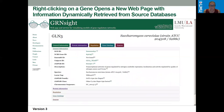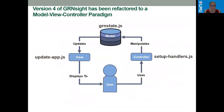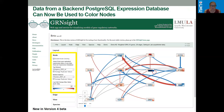Right-clicking on a gene opens a new web page with information dynamically retrieved from source databases. Version 4 of GreenSight has been refactored to a model-view-controller paradigm, resulting in taking 12 files down to 6 files and greatly simplifying the code. New in version 4 beta, we now have data in a back-end Postgres expression database that can be used to color nodes.